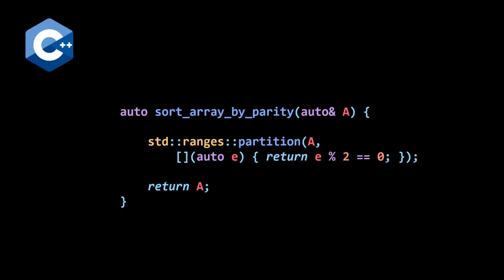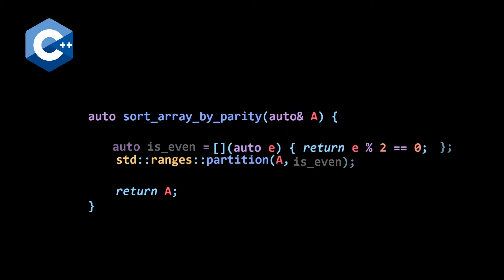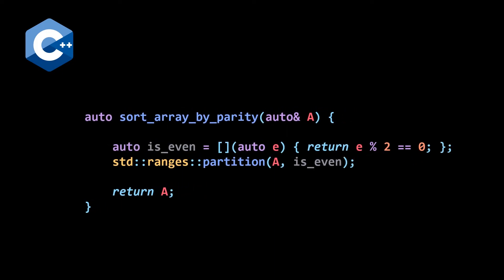And this is the updated version that uses C++20 ranges. Note that we no longer have to pass in two iterators, we can just pass in the single range, aka the container here, which is pretty cool. And you might be even thinking at this point, you can make it a little bit more readable by naming our lambda, and then just calling std::ranges::partition A and then is_even.